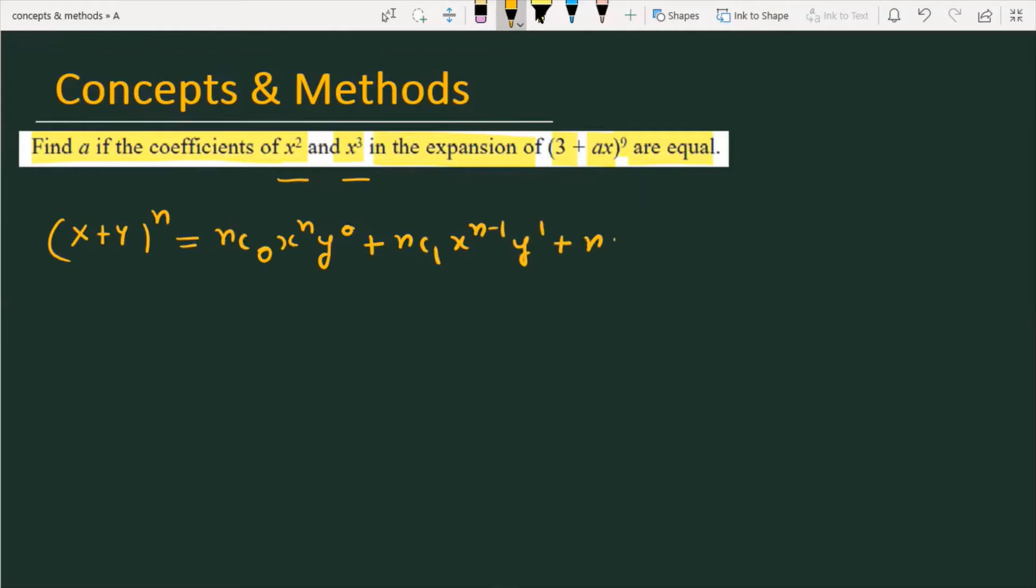Plus ⁿC₂ x^(n-2) y² plus dot dot dot, and the last term is ⁿCₙ x⁰ yⁿ. This is the binomial expansion.